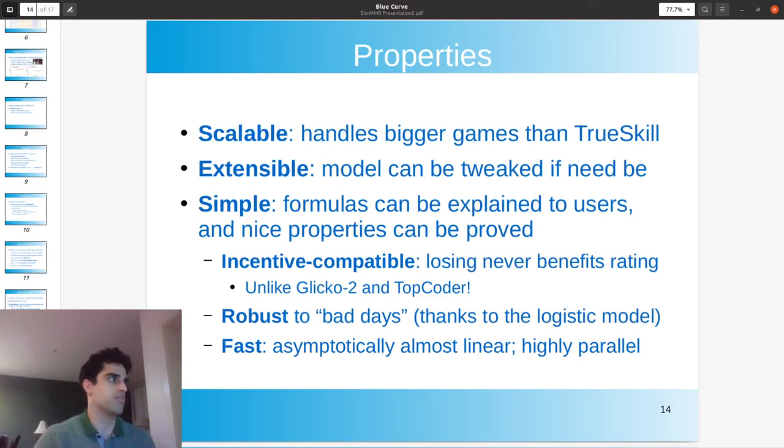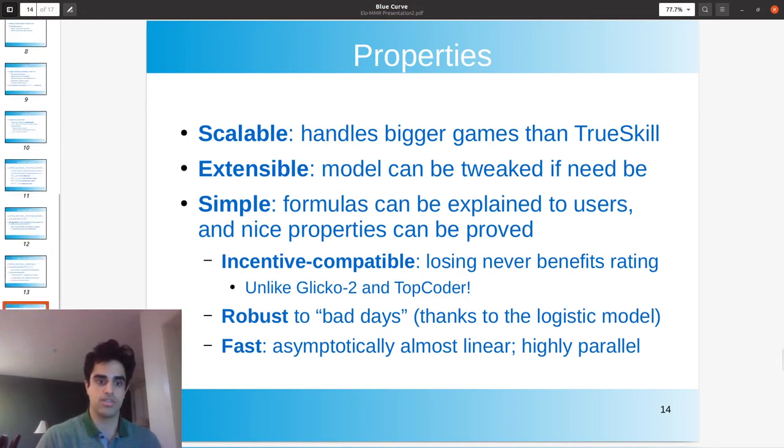So you may be normally you're a very strong contestant, but today you're last place because of an injury, because of your Wi Fi cutting off, whatever. Well, in our system, there's a finite bound on how many rating points you can lose in one contest, which is not true for a lot of these other systems. Our system is also extremely fast. It's asymptotically almost linear time in the number of contestants and highly parallelizable.